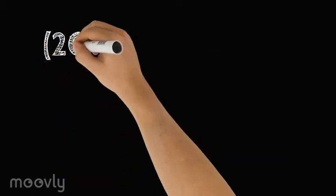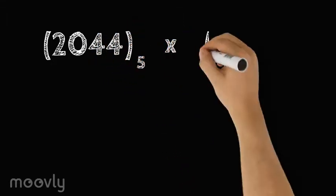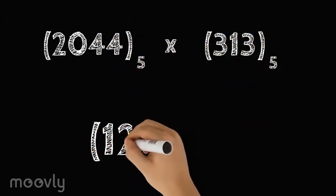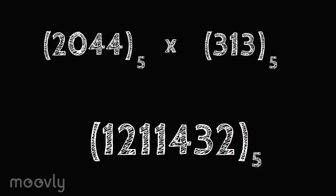Then, 2044 times 313 in base 5 gives us 1211432 also in base 5.